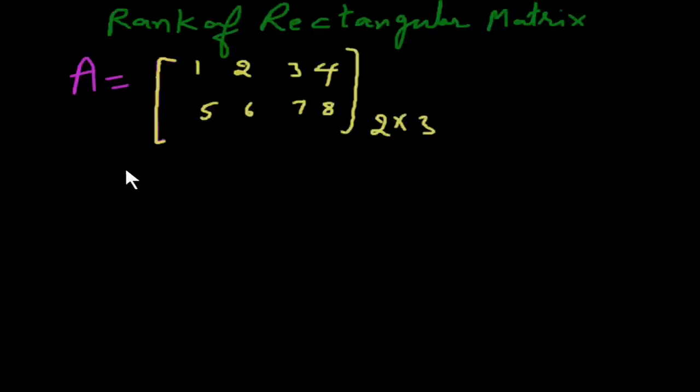Dear students, this is the first condition that rank of matrix can be calculated only for a square matrix. Because it has two rows, R1 and R2, and columns R4, this is a rectangular matrix. We cannot find its rank, so we can take its sub-matrix. Any sub-matrix we can take and calculate its rank of matrix.